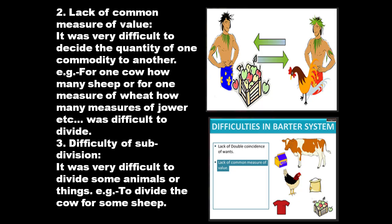The next problem is the lack of a common measure of value. It was very difficult to decide the value of one commodity relative to another — for example, one cow equals how many sheep, or one measure of wheat equals how many measures of jowar. This was very difficult to determine, making it the second major problem. The third problem is difficulty of subdivision — it was very difficult to divide some animals or things, for example, dividing a cow to exchange for some sheep.